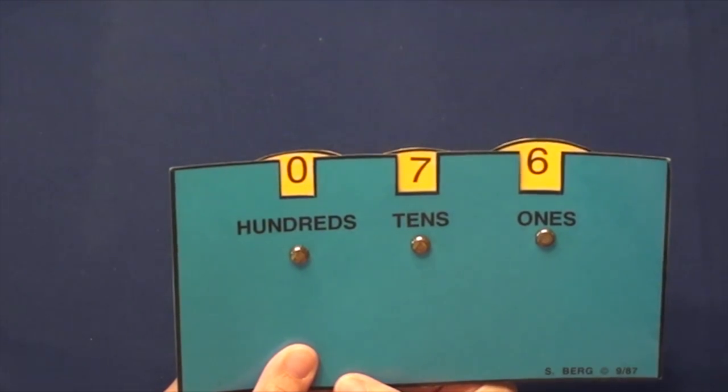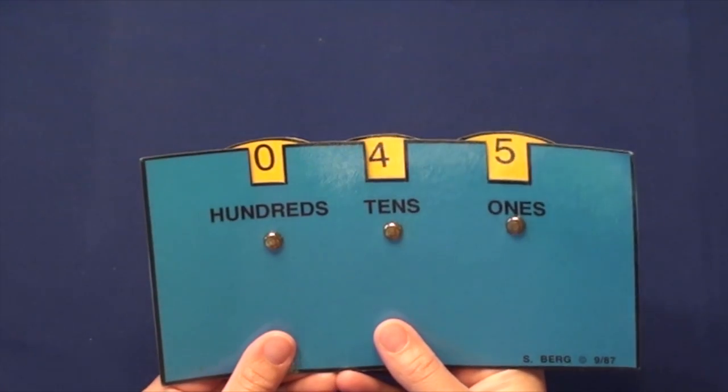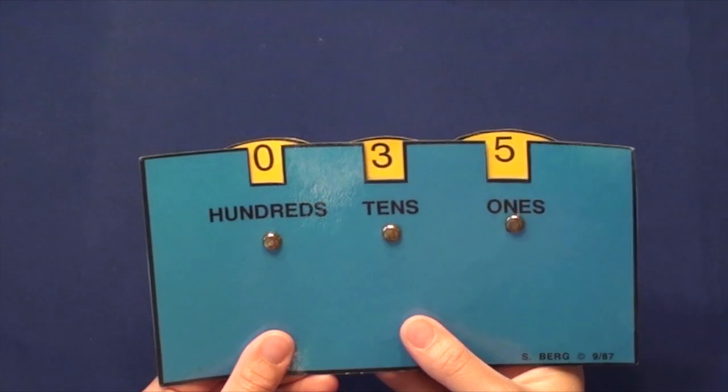Here's one last problem for you to try. 45 minus 20. 45 minus 20 equals 25.